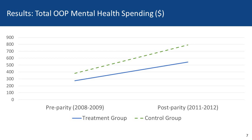One of the other outcomes examined in the study was total out-of-pocket mental health spending. Here you can see that the control group had higher out-of-pocket costs in both the pre-period and post-period as represented by the dotted line, and the treatment group had lower but still increasing out-of-pocket costs between the pre-parity period and the post-parity period.